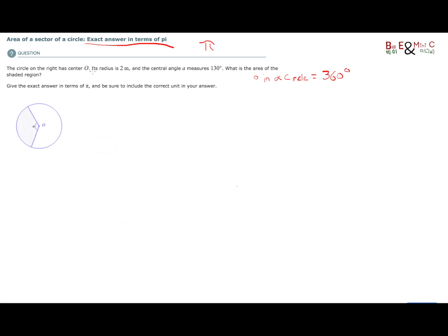So we are told that the circle has a radius of 2 meters, so that's 2 here, and we are told that it has a central angle of 130, and central angle means this part right here. That means this right here is 130 degrees and we're being asked to find the area of the shaded region. So we're being asked to find the area just of this part right here.